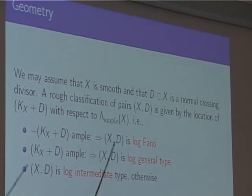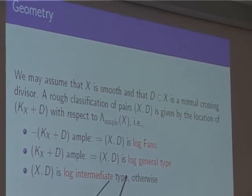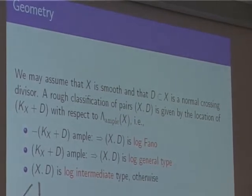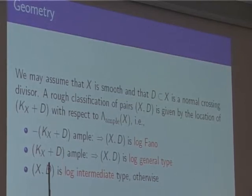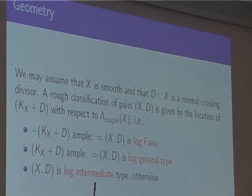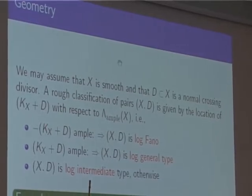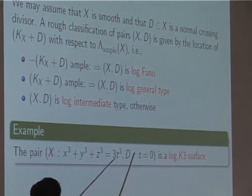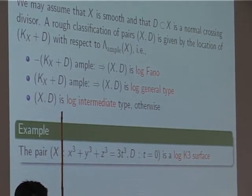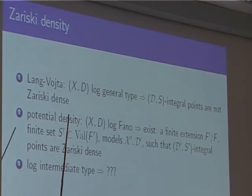A rough geometric classification of pairs is given by the location of the class K_X + D with respect to the ample cone. If -(K_X + D) is ample, we speak about log Fano varieties; if the opposite holds, it's a variety of log general type; and if we are neither here nor there, we speak about log intermediate type. I like to think of this pair as a log K3 surface.